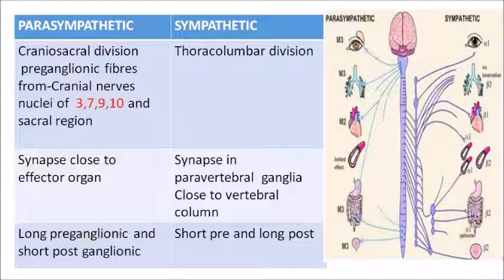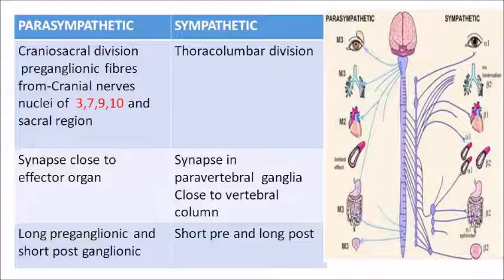Looking at the figure, the left side is the parasympathetic system — cranial nerves 3, 7, 9, 10, and the sacral region. The sympathetic system is the thoracolumbar division — thoracic and lumbar portions of the spinal nerves. In the parasympathetic system, the synapse is close to the affected organ, giving long preganglionic and short postganglionic fibers. In the sympathetic system, the ganglia are close to the spinal cord, giving short preganglionic and long postganglionic fibers.